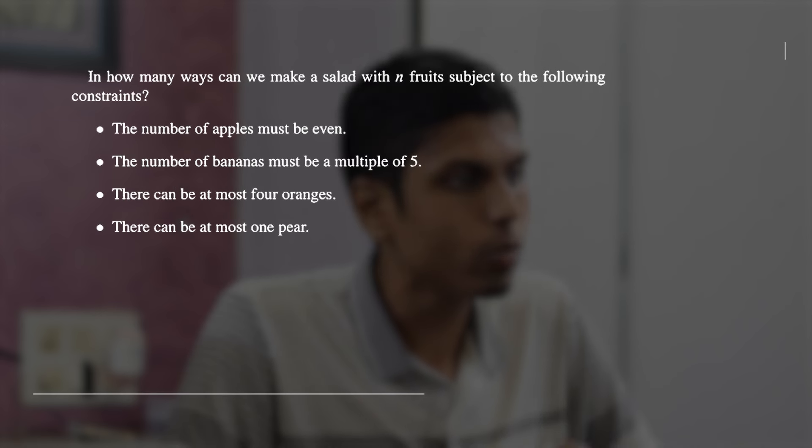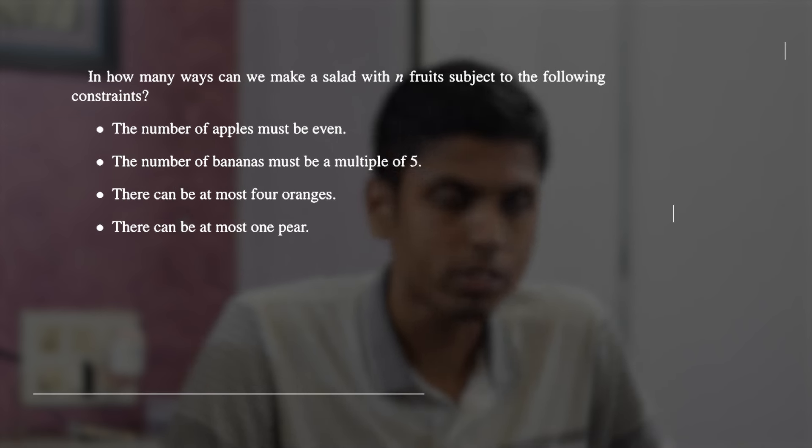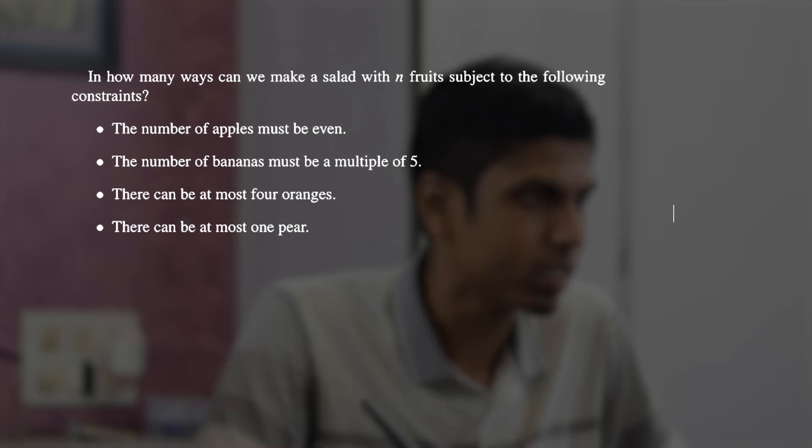Let's go into the problem. Here is the problem: it is asking you to count the number of ways to make a fruit salad with n fruits subject to the following constraints. First, the number of apples, let's consider it to be A, must be even. And bananas, take it as B, must be a multiple of 5. Oranges, let's consider the number of oranges to be C, should be less than or equal to 4.